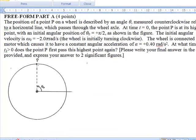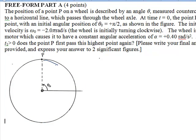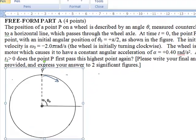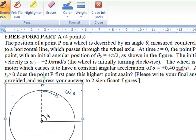We have this point P. It begins at the top, and it is rotating clockwise. Omega sub zero is equal to negative two pi radians per second.